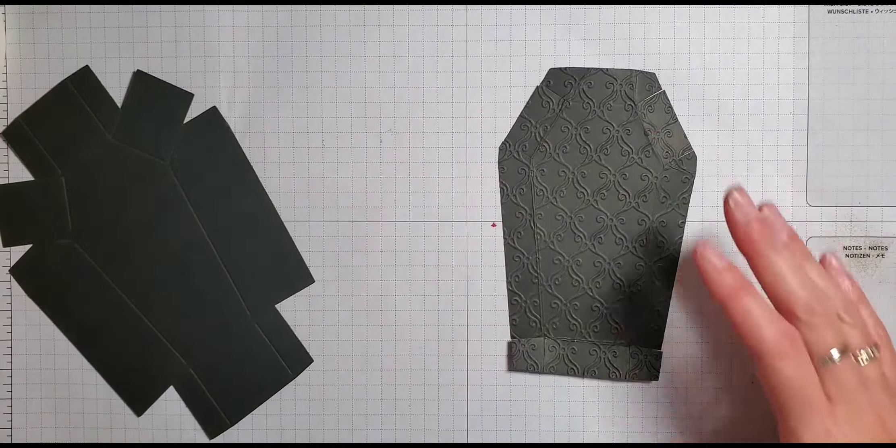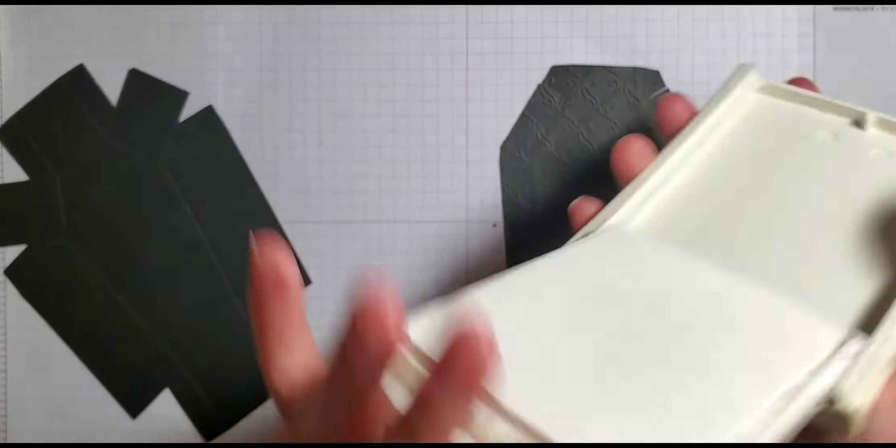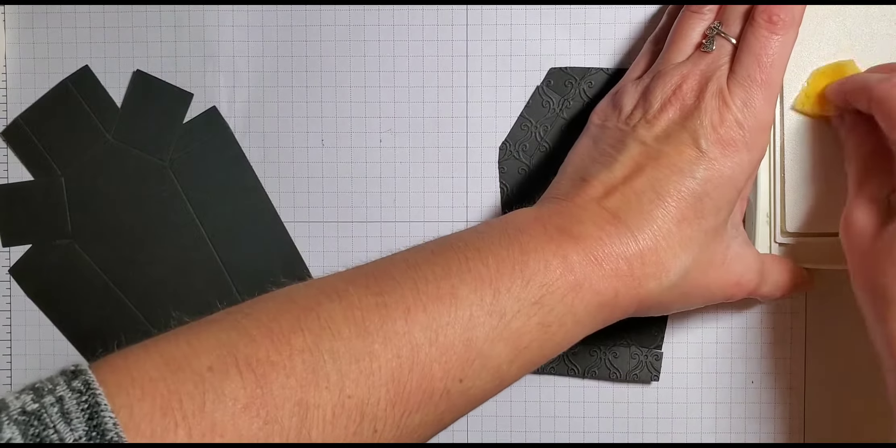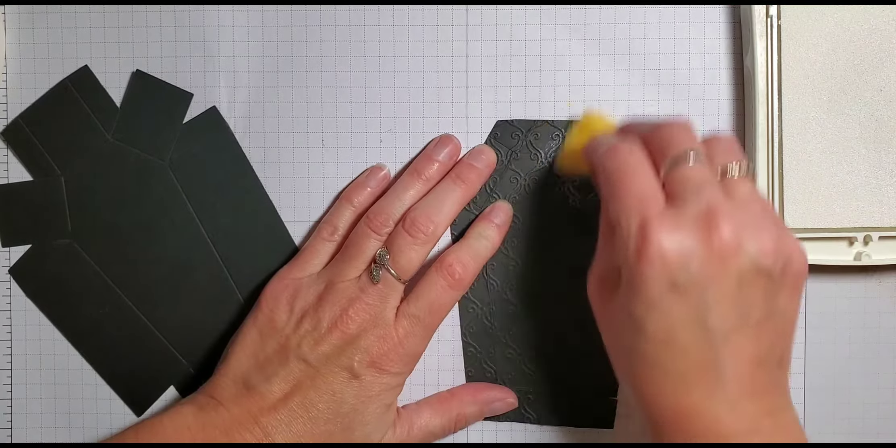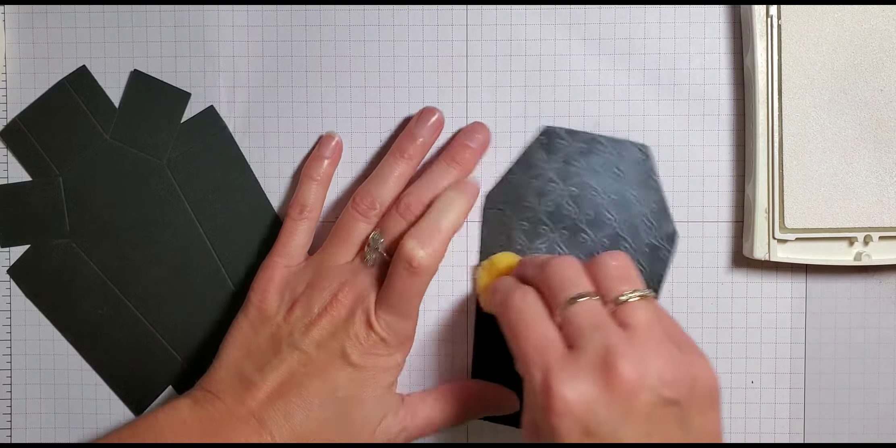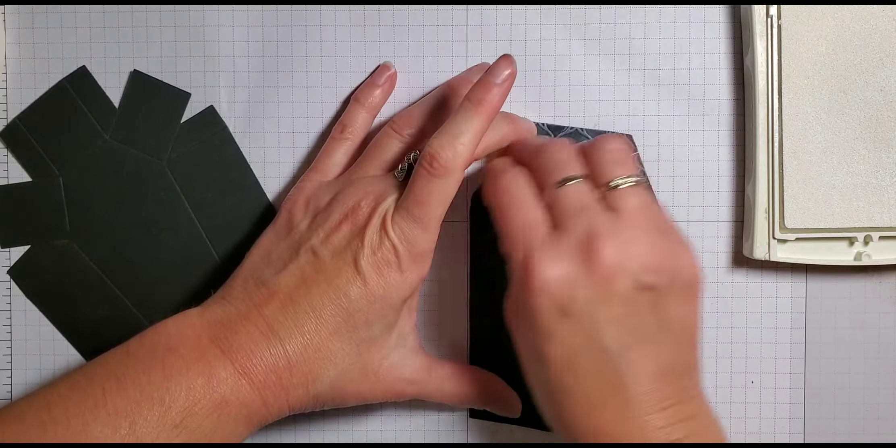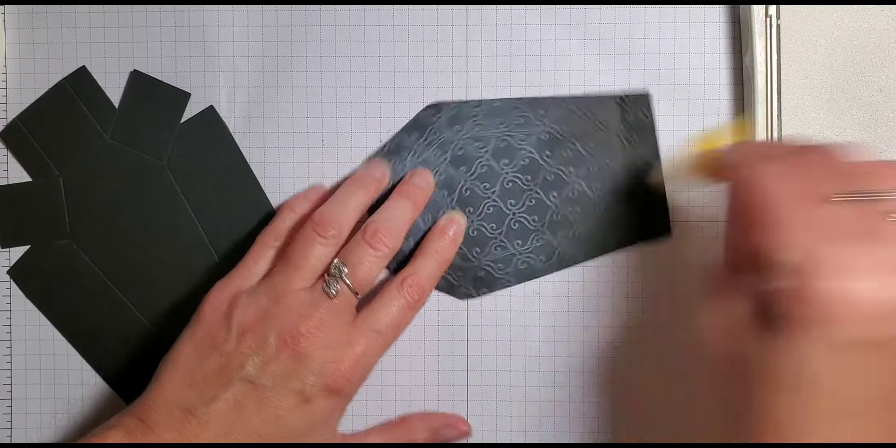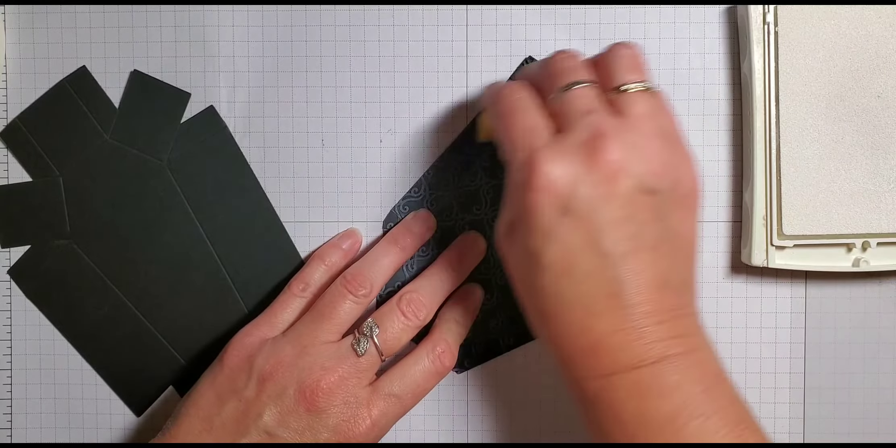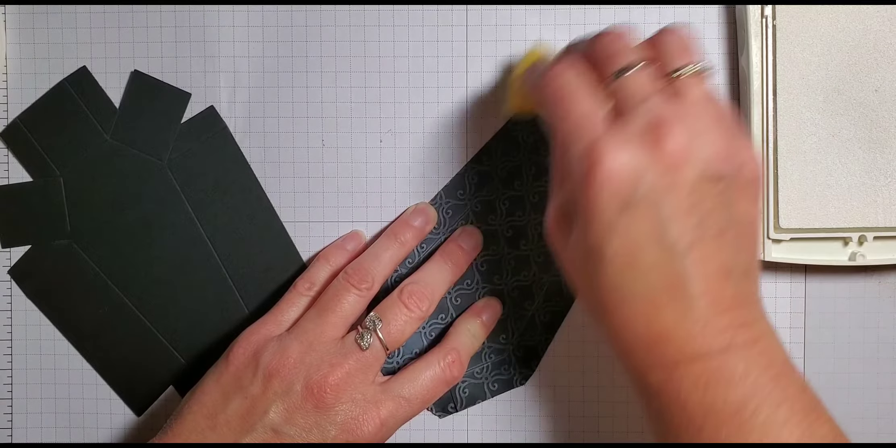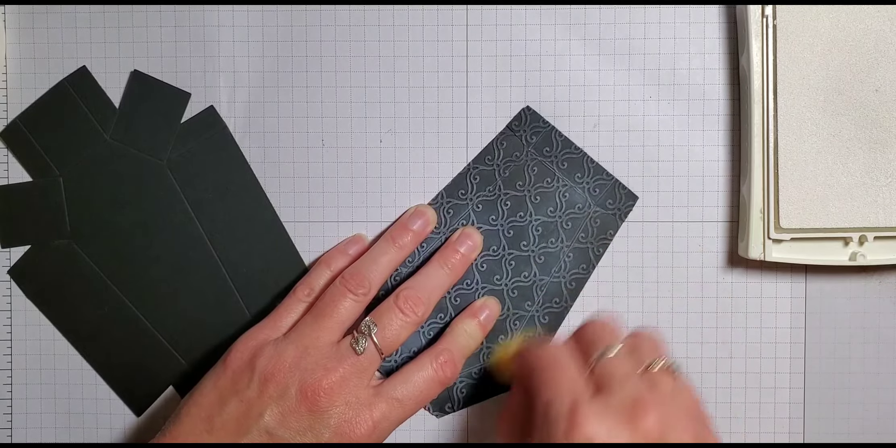Now, before I start assembling, I actually took my whisper white ink pad and a stamping sponge and I inked that up and then I just did little circles here on my black cardstock. It just makes it kind of look a little bit spookier, I think. So I'm just going to go ahead and do some little circles on here. Get a little bit more distressed look on this.